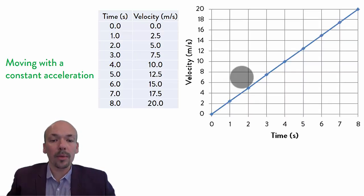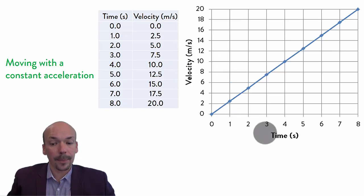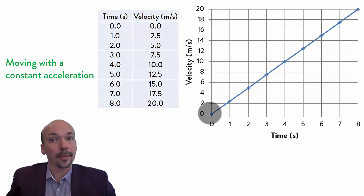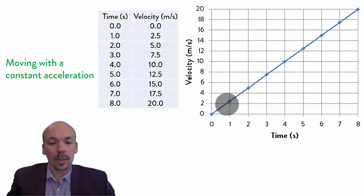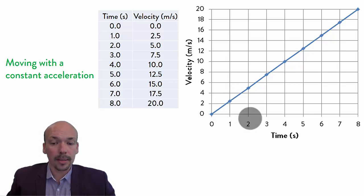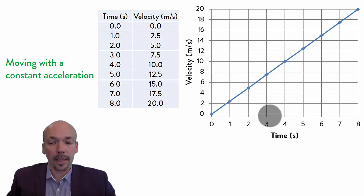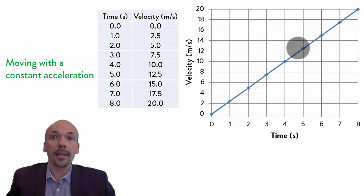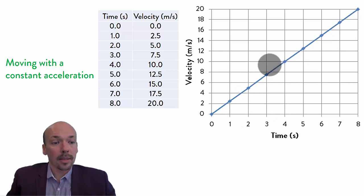If we look at a graph, it will look like this. If we have velocity on the vertical axis and time on the horizontal axis, you can see that at the beginning it's stationary. After 1 second it's going 2.5 meters per second, after 2 seconds it's going 5 meters per second, and so on. As you can see, it's a straight line, which shows us that it's a constant acceleration.